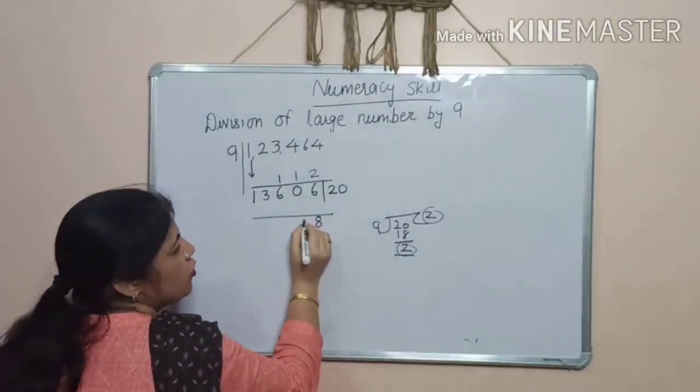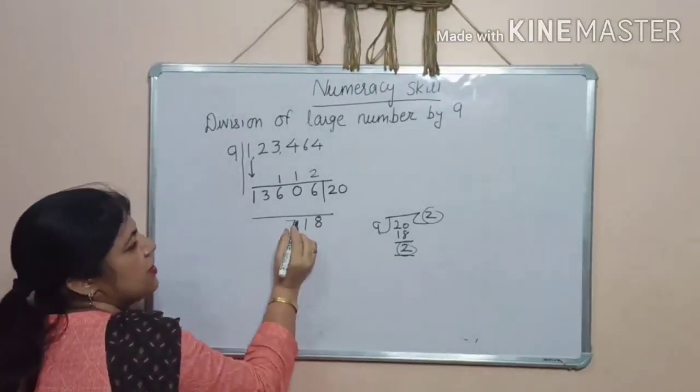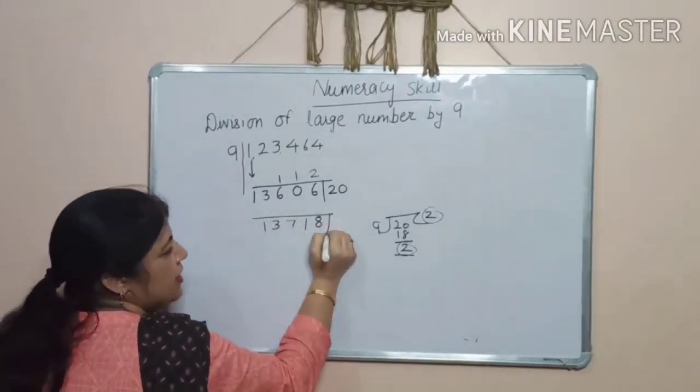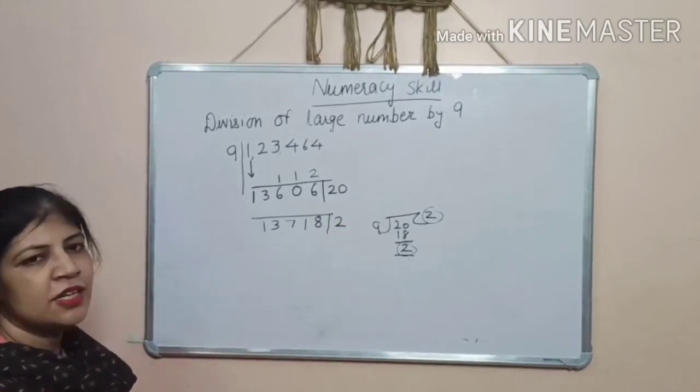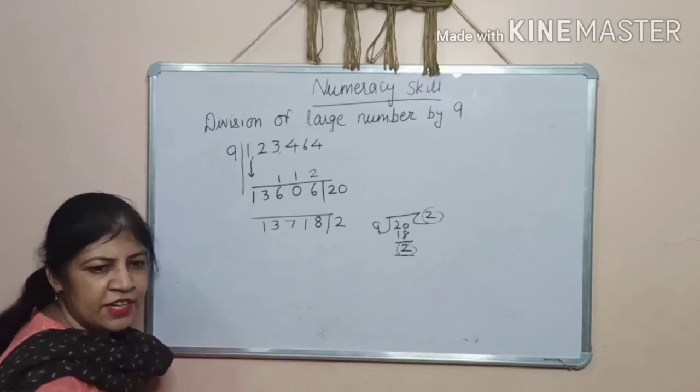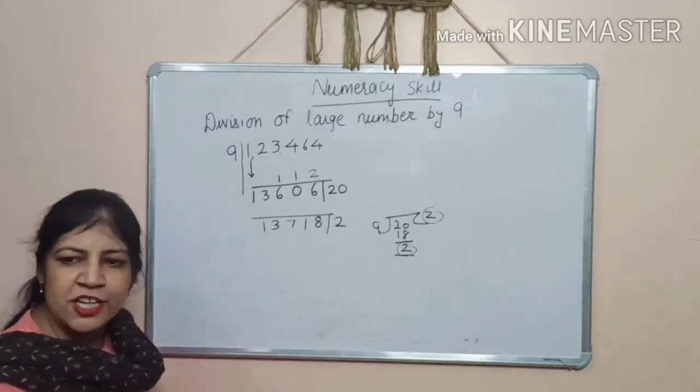And 2 will be your remainder. Now, add this. 6 and 2. 8. 1, 6 and 1. 7. 3. And remainder is 2. So, quotient is 13,718 and remainder is 2.